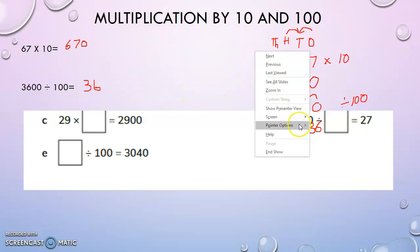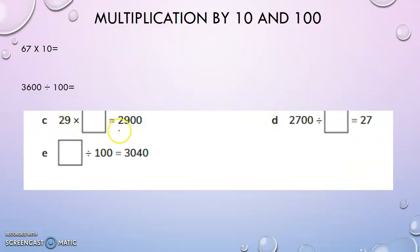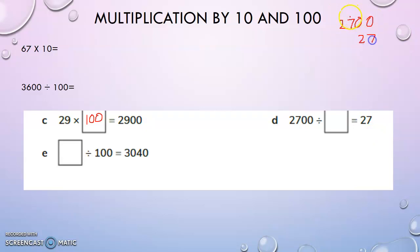Now let us look at more examples. Twenty-nine times a number gives two thousand nine hundred. The digits have shifted two places to the left, so this is equal to multiplying by hundred. Now, two thousand seven hundred divided by some number equals twenty-seven — find the missing number. Two thousand seven hundred has become twenty-seven, shifting two places to the right. Two places to the right is division by hundred. One place to the right is division by ten, two places to the right is division by hundred.